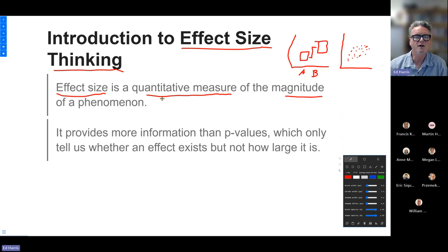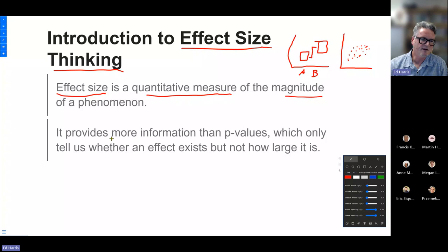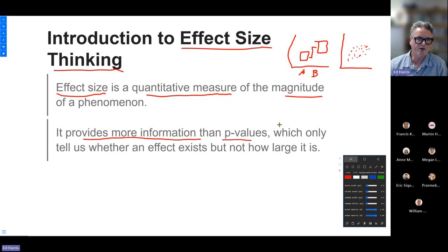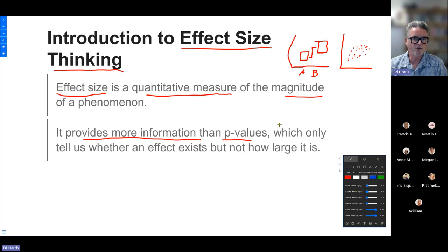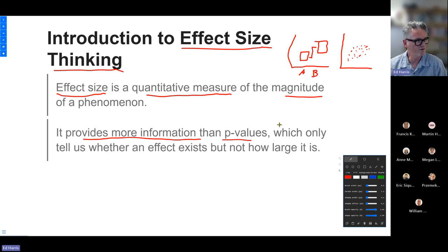Why do you care about effect size? It provides excess information beyond a simplistic thing like a p-value. A p-value only gives us a yes or no — is there an effect different to zero? But if we talk about the quantification of the effect size, we have a bigger depth of knowledge. We can say not only that it's different to zero, but how relatively big it is. If you have an experiment with more than one treatment and a control, you can use the relative effect size to compare your treatments to each other and to the control — quantifying that difference rather than just yes or no.